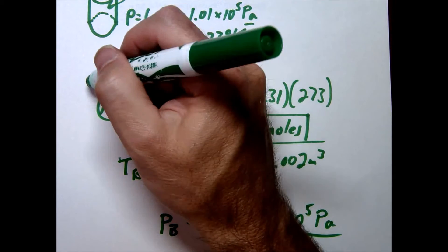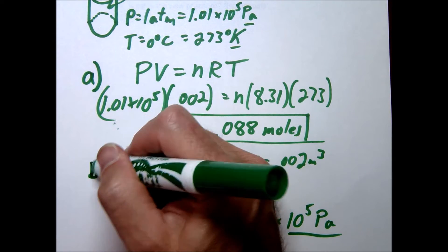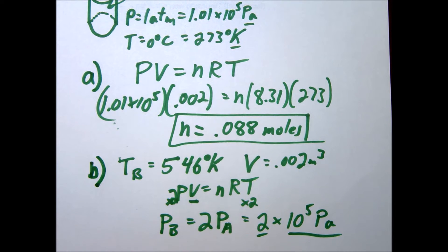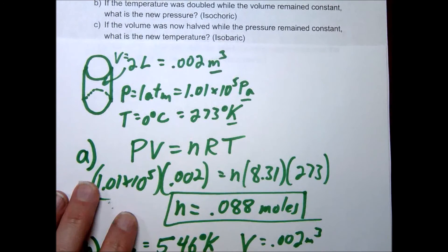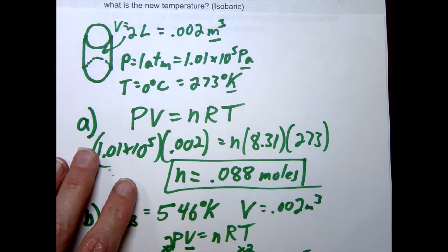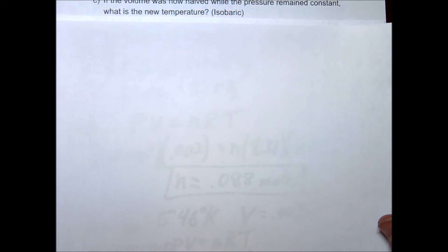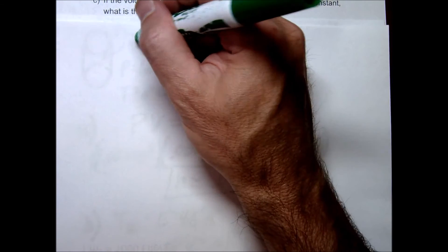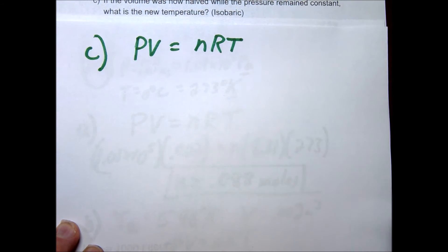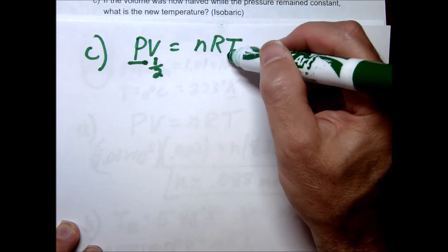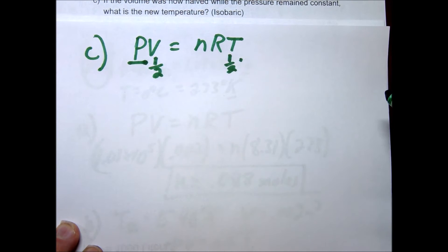That was letter A and letter B. Now for letter C: the volume is cut in half and the pressure is held constant. Holding the pressure constant is called an isobaric process. Doing this conceptually with PV = nRT — if pressure is constant and volume is cut in half, then temperature must also be cut in half.